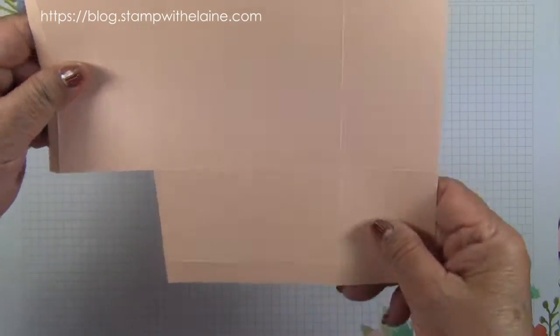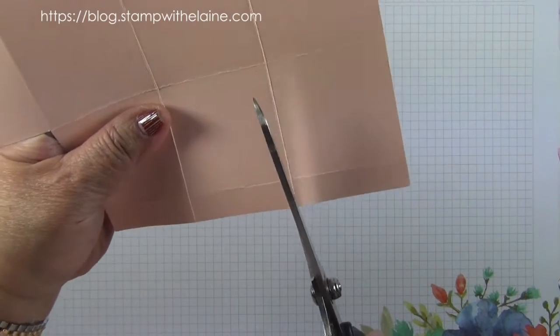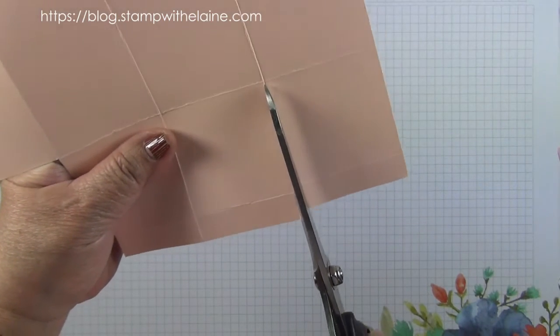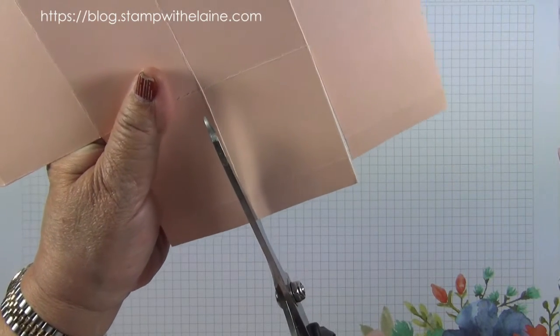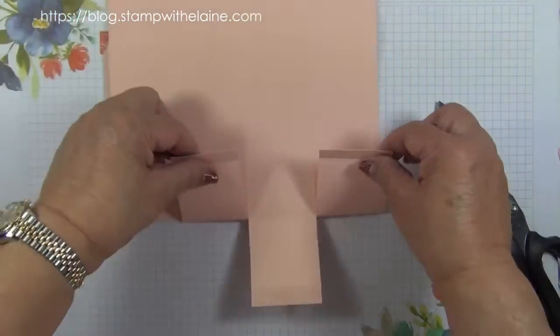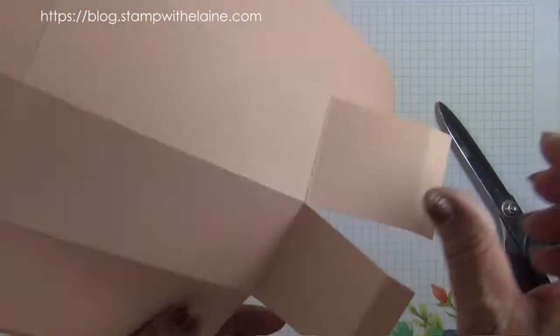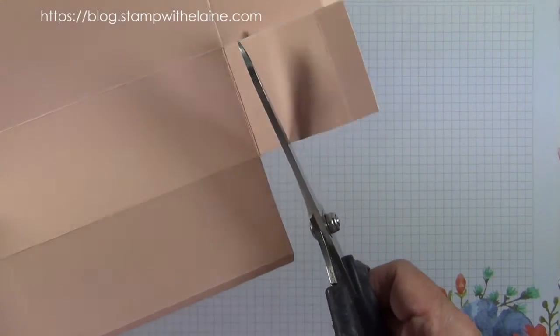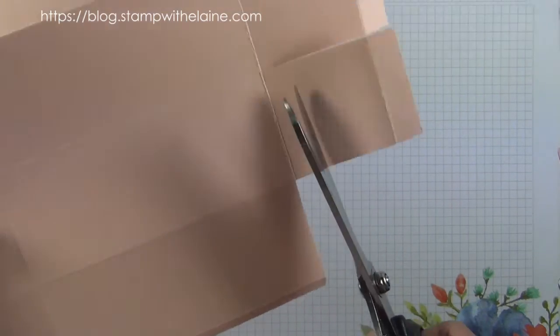Now you want to keep these three panels but you're going to cut up to the second score line on all of them. On these two outside flaps you're going to just do it by eye and snip off, leaving about half an inch.